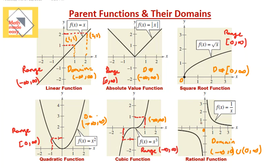For the rational function, its range is the same as its domain. All values are represented except for zero, because you can never divide 1 by any number and get zero as the result. So the output is never zero. The range of this function is from negative infinity to zero, union zero to infinity.